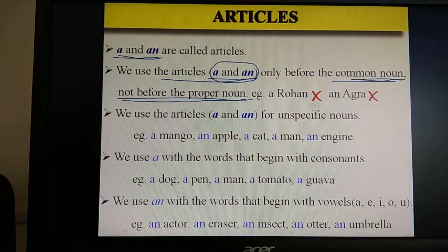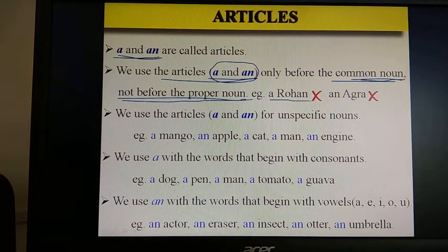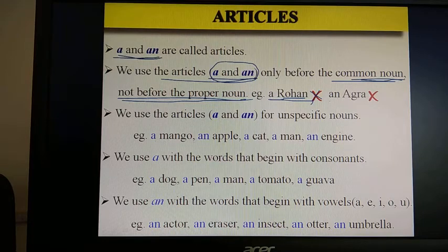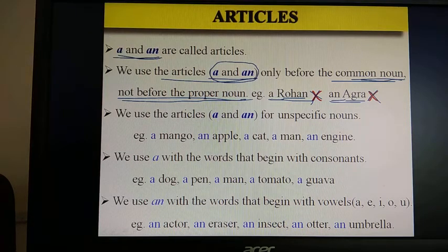If you use a or an before a proper noun, then it will be wrong. For example, 'a Rohan' — Rohan is a proper noun, therefore if you write 'a Rohan' it is wrong. 'An Agra' — Agra is a proper noun, therefore if you write 'an Agra' it will be wrong. So article a and article an cannot be used before a proper noun. Remember that.